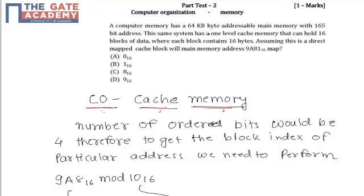memory has 64 KB byte-addressable main memory with a 16-bit address. This same system has one level cache memory that can hold 16 blocks of data, where each block contains